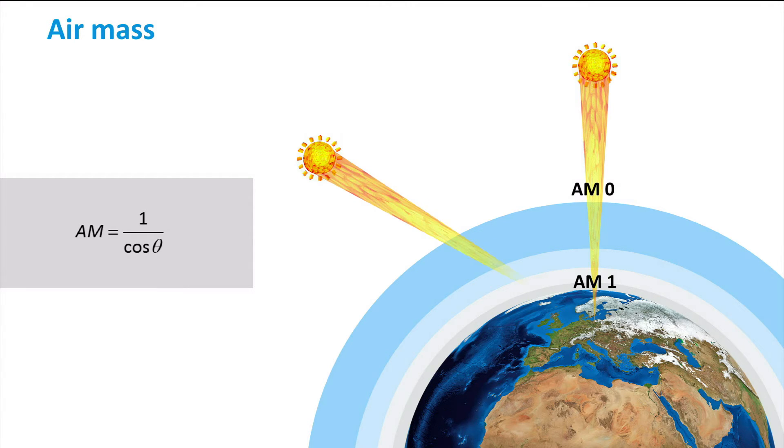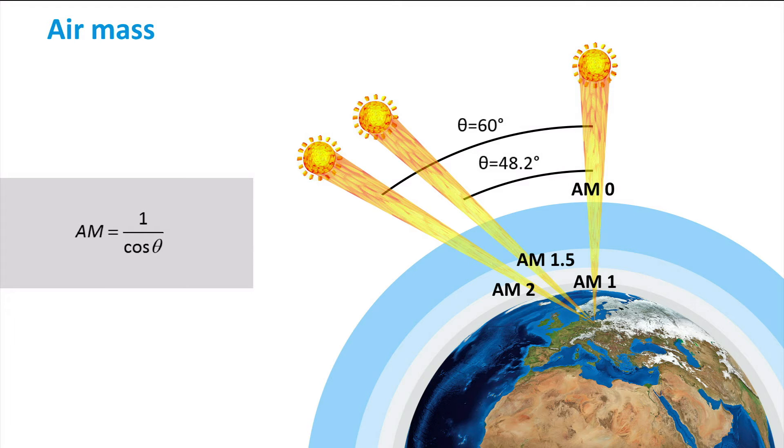When the Sun is for example at an angle of 60 degrees with the zenith, we receive an AM2 spectrum. The AM1.5 spectrum we showed earlier is obtained for an angle of 48.2 degrees.